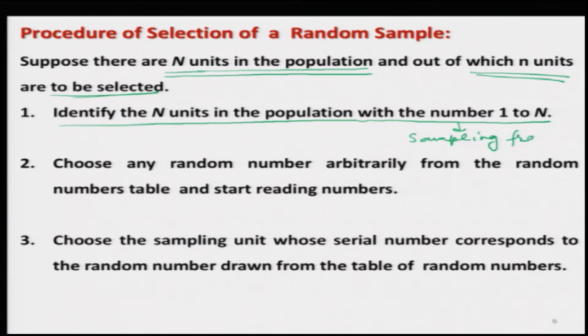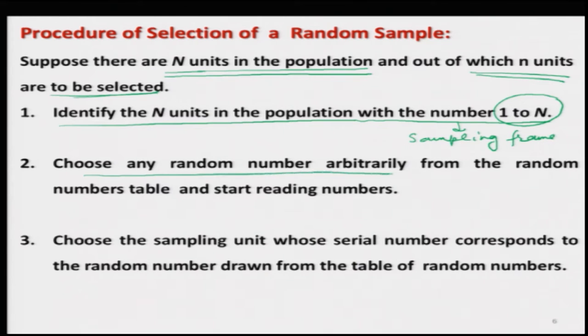You can correlate this directly to the concept of a sampling frame, because in a sampling frame you are attaching a tag to every unit in the population. For example, suppose there are 50 students in a class and you want to draw a sample of size 10. In the first step you have to assign unique, non-overlapping roll numbers to all 50 students. Similarly, when I say please number all the sampling units in the population as 1, 2, 3, 4, up to capital N — that is exactly the same process.